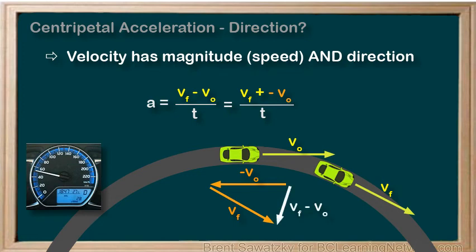Notice that the resulting direction of the change in velocity, or acceleration, is directly towards the center of the circle. This is true of all centripetal acceleration. Centripetal acceleration involves an object moving around a circular path, and centripetal acceleration is always directed towards the center of that circular path.